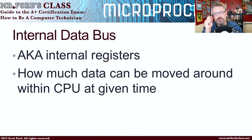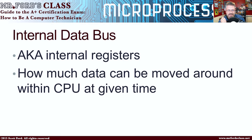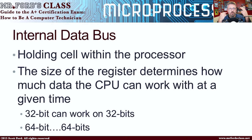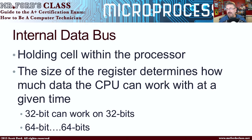You might also hear these being called the registers or the internal registers. What this does is it determines how much data can be moved around within the CPU at a given time. It's basically holding cells within the processor — its to-do list, its little in-buckets, what it can work with at that point in time. Going back to our brain analogy, this would be like short-term memory where you can only work with so many things at a time. This internal register is what you can move within the CPU at any given time.